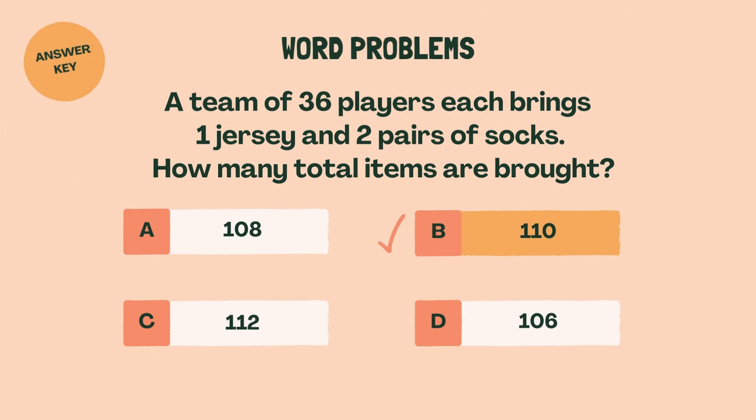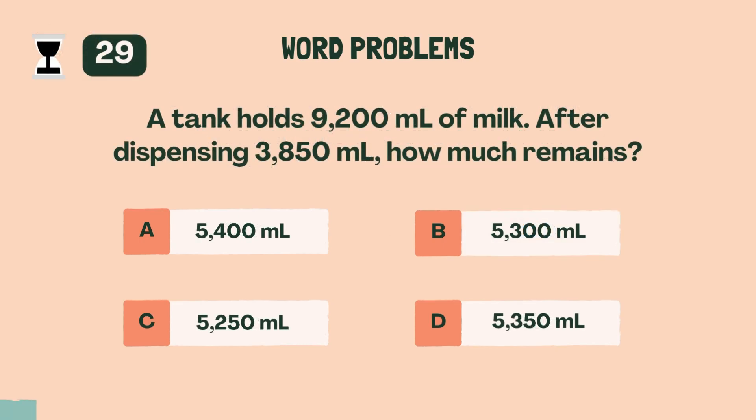A tank holds 9,200 milliliters of milk. After dispensing 3,850 milliliters, how much remains? D, 5,350 milliliters.